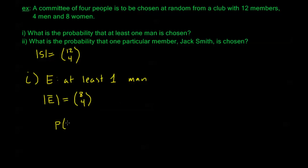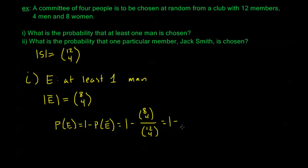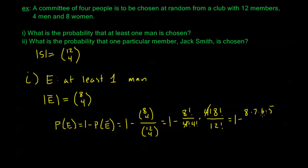The probability that at least one man is chosen is going to be one minus the probability that no men are chosen: one minus eight choose four over twelve choose four. That's the same as one minus eight factorial over four factorial times four factorial, divided by twelve factorial over four factorial times eight factorial. The four factorials cancel out, giving us one minus eight times seven times six times five, over twelve times eleven times ten times nine.